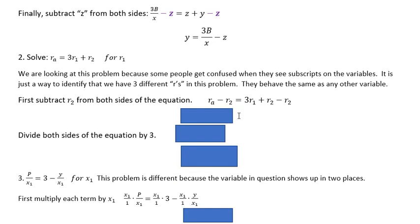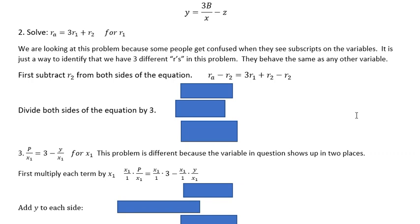For the second one, we're looking for R sub 1 to isolate the R sub 1 here. We're looking at this problem because people get confused when they see subscripts on the variables. It is just a way to identify that we have three different R's in this problem. R subscript 1, R subscript 2, and R subscript A. We usually just say R sub 1, R sub 2, R sub A. They behave as any other variable.